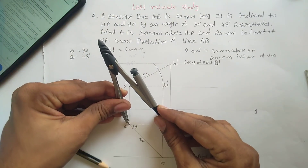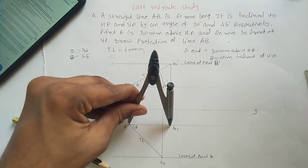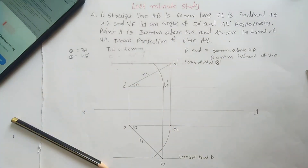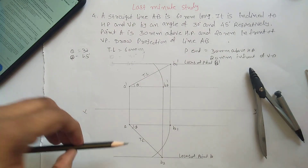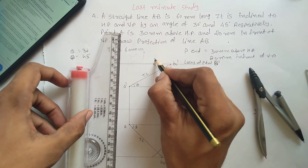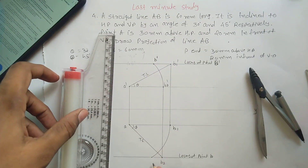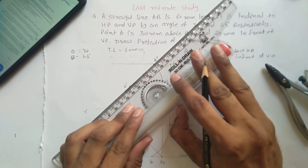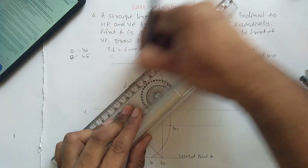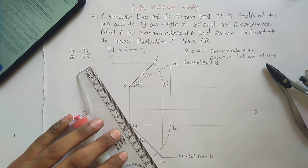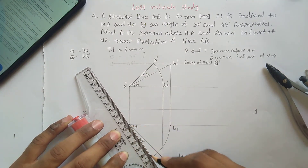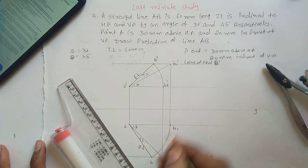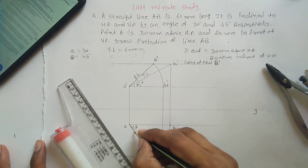Same way, from A to B1, make an arc to the locus line. The intersection point gives you B dash and point B. Join A dash and B dash — that is the final front view of your line. Join A and B. This gives the elevation length, the plan length, and the angles alpha and beta.